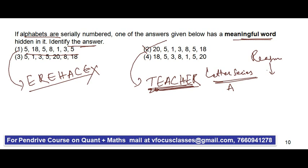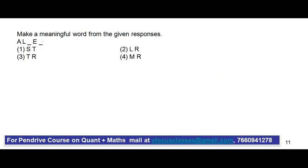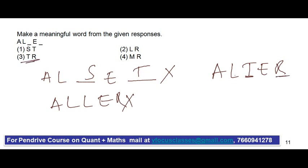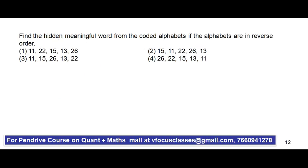Next question: make a meaningful word from the given responses. The pattern is A, L, dash, E, dash — substitute the options. First option gives double L, which is not meaningful. Second option gives double L, E, R — no meaning. Third option substitutes T and R, giving A, L, T, E, R — ALTER — which has a meaning. So the third option is correct. Substituting T and R gives the meaningful word ALTER.